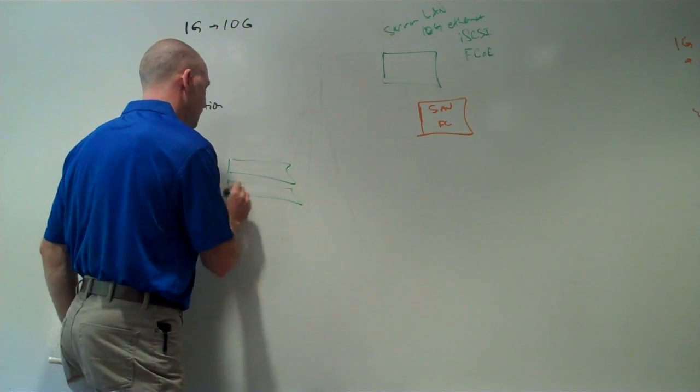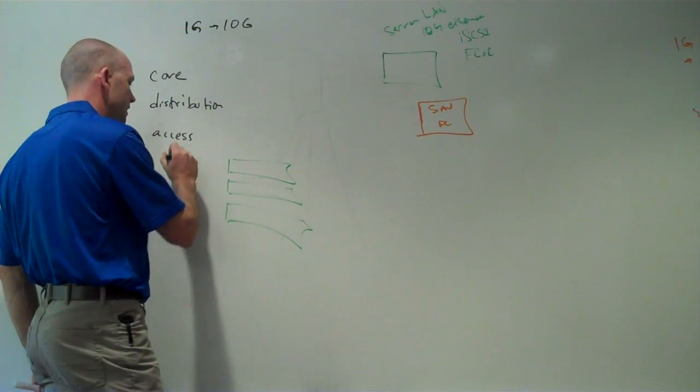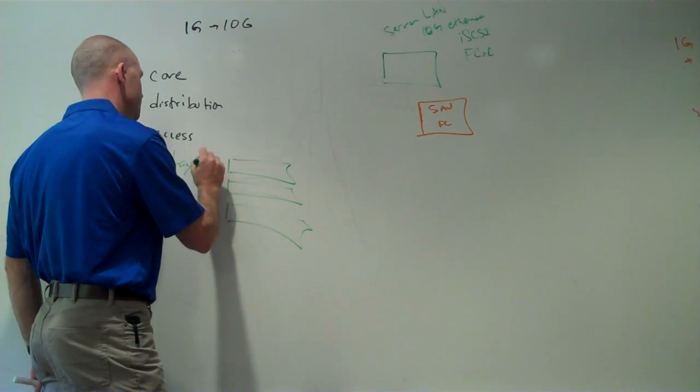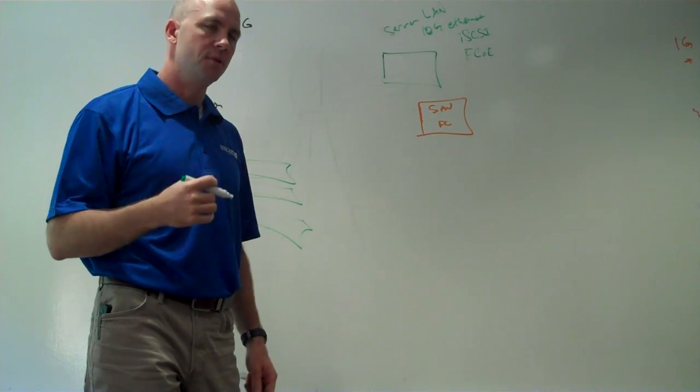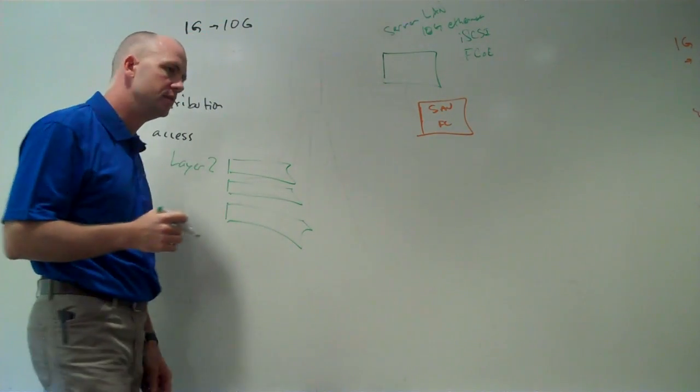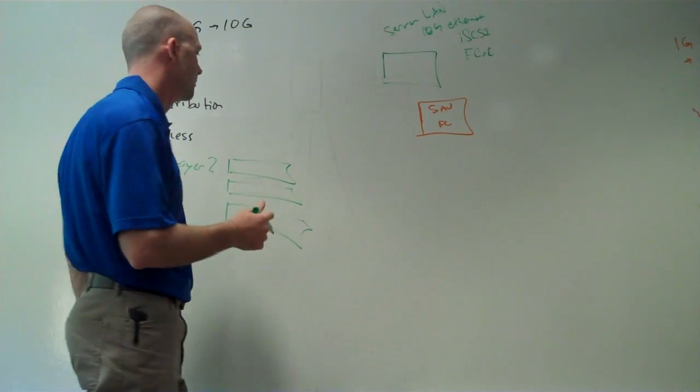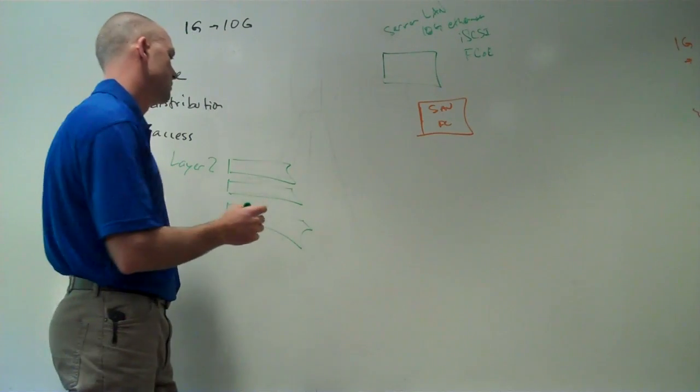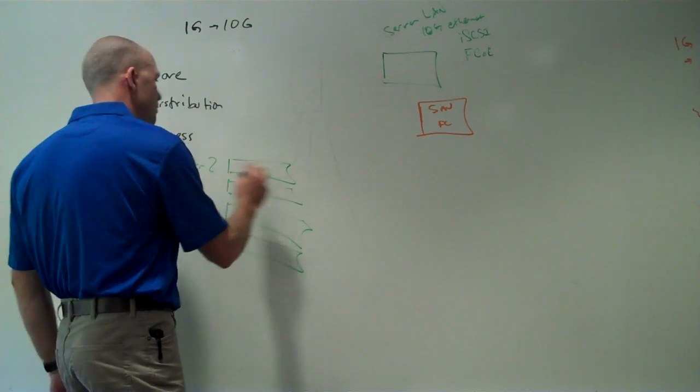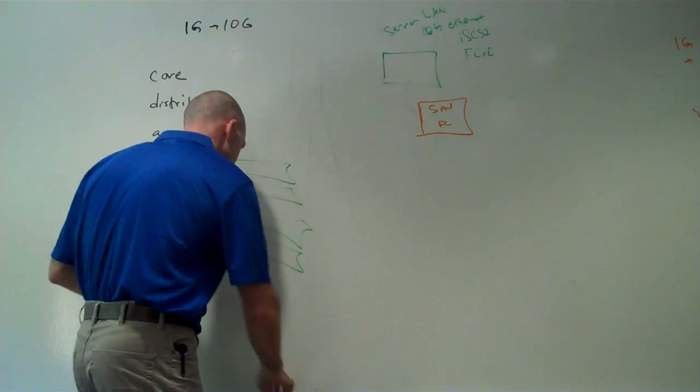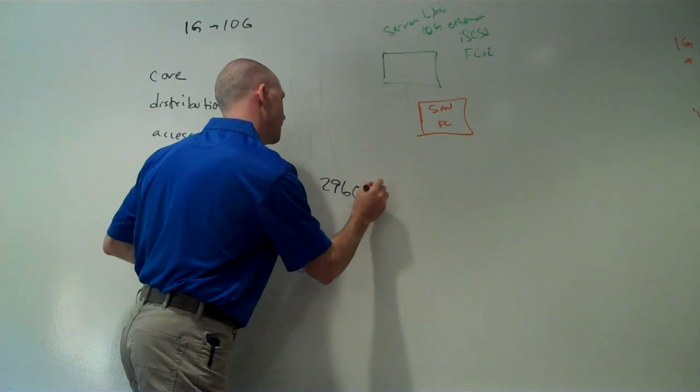But at the access layer, we usually, organizations vary on what they do. But typically at the access layer we really only need layer 2 switches. It's possible to do layer 3 switching in the closets. In most cases there's really not a need to do that because it complicates things excessively. And since there's not really a lot of peer-to-peer traffic.